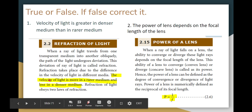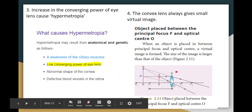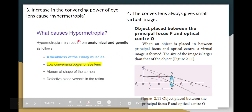True or False: the power of a lens formula is P = 1/f. This depends on the focal length of the lens. This is correct — answer: TRUE. Next, True or False: an increase in the converging power of the eye lens causes hypermetropia. This statement needs checking — what actually causes hypermetropia?